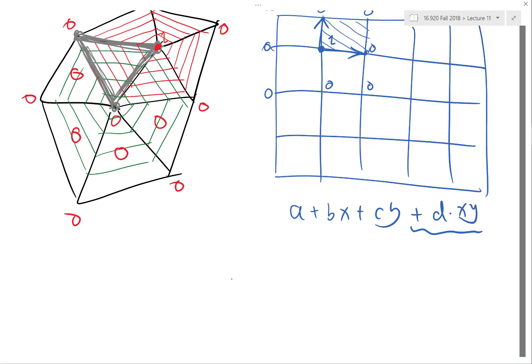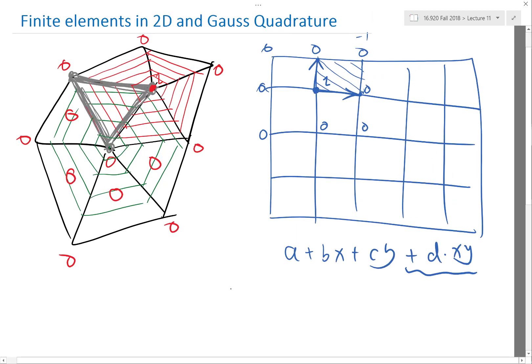Alright, so of course, tricks like this is just going more and more as you go to three dimensions, and the most general and complicated finite elements are in three dimensions, but not discretizing three dimensional domains.